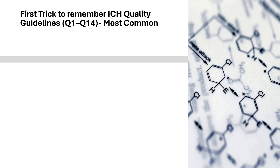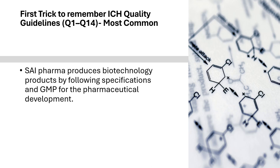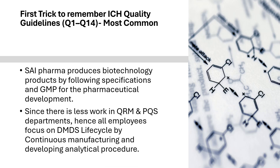Now we will discuss how to remember all Quality Guidelines from Q1 to Q14 using two tricks. The first trick, which is most common, uses this sentence: 'Cypharma produces biotechnology products by following specifications and GMP for the pharmaceutical development. Since there is less work in QRM and PQS departments, hence all employees focus on DMDS life cycle by continuous manufacturing and developing analytical procedures.'